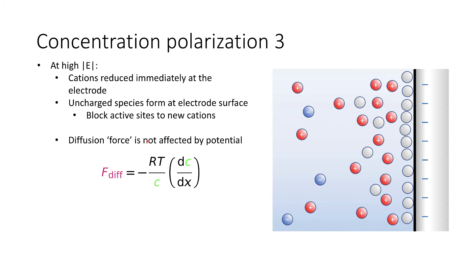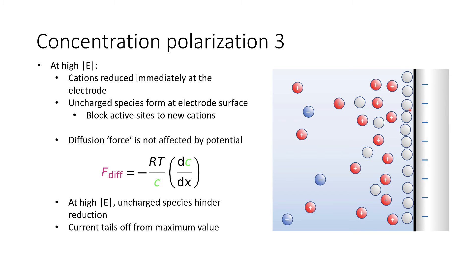This diffusion force is not affected at all by the potential, so no matter how much of this uncharged species we have, they will still be diffusing at the same rate related to their concentration. At high magnitudes of potential, these uncharged species hinder the reductive process at the electrode, causing the current to tail off from its maximum value and reducing the rate at which the reaction can take place. This is a key feature in voltammetry.